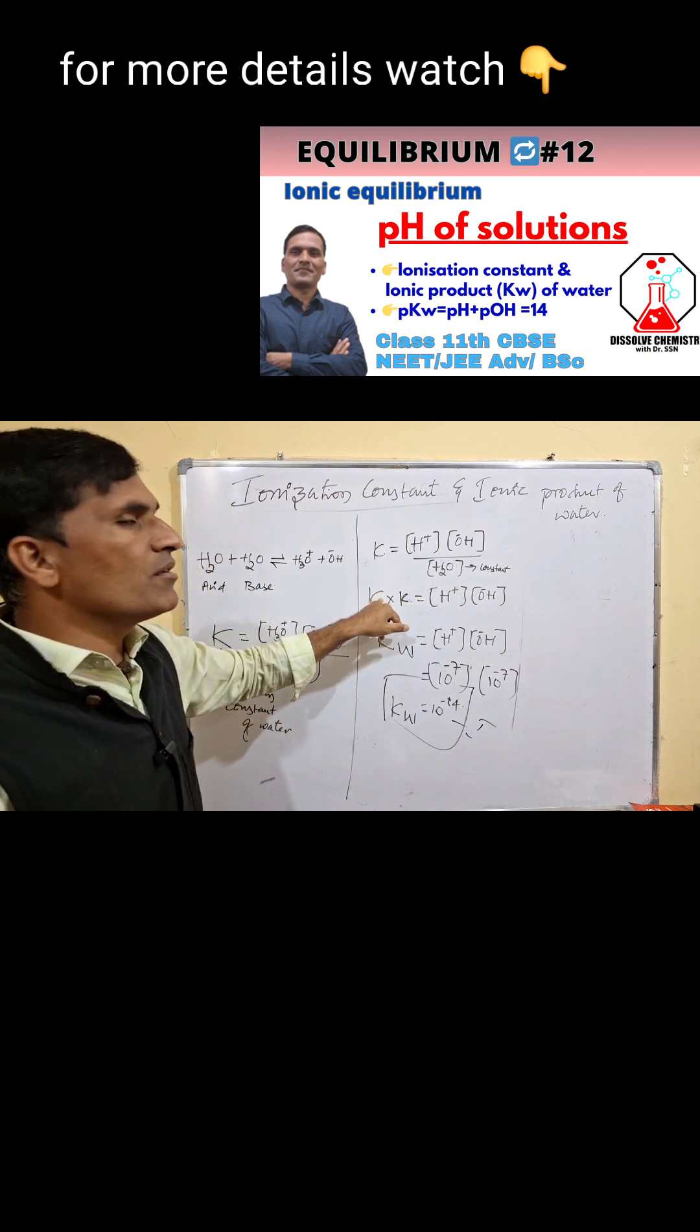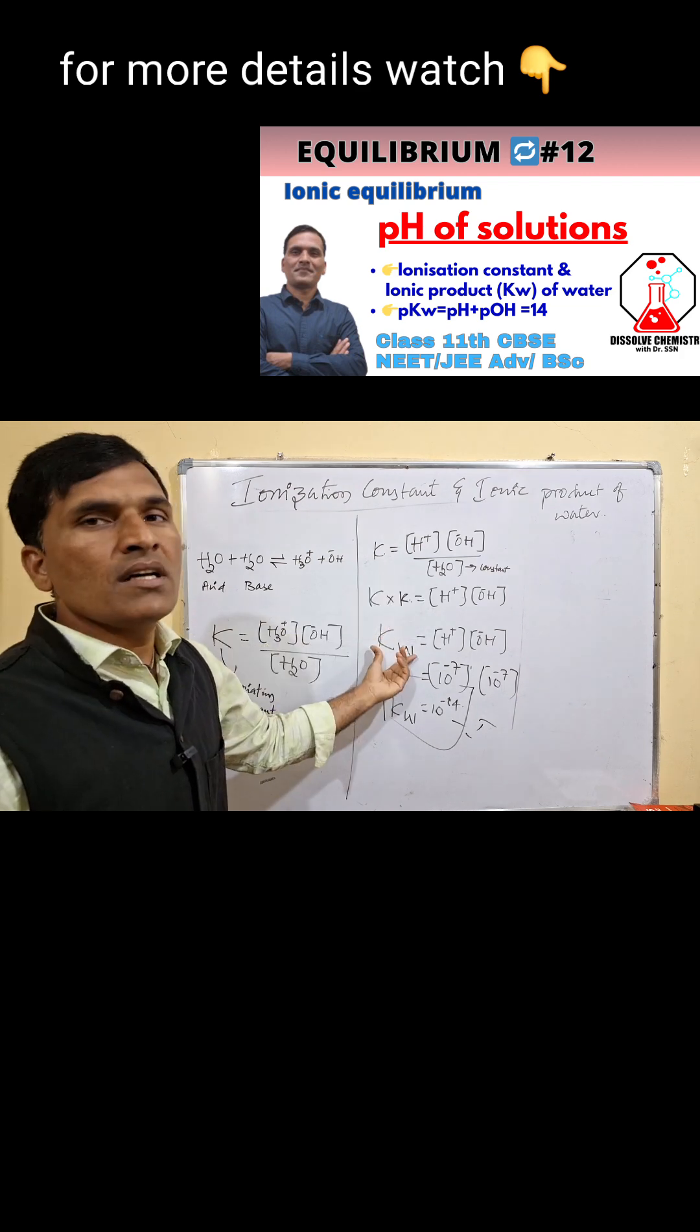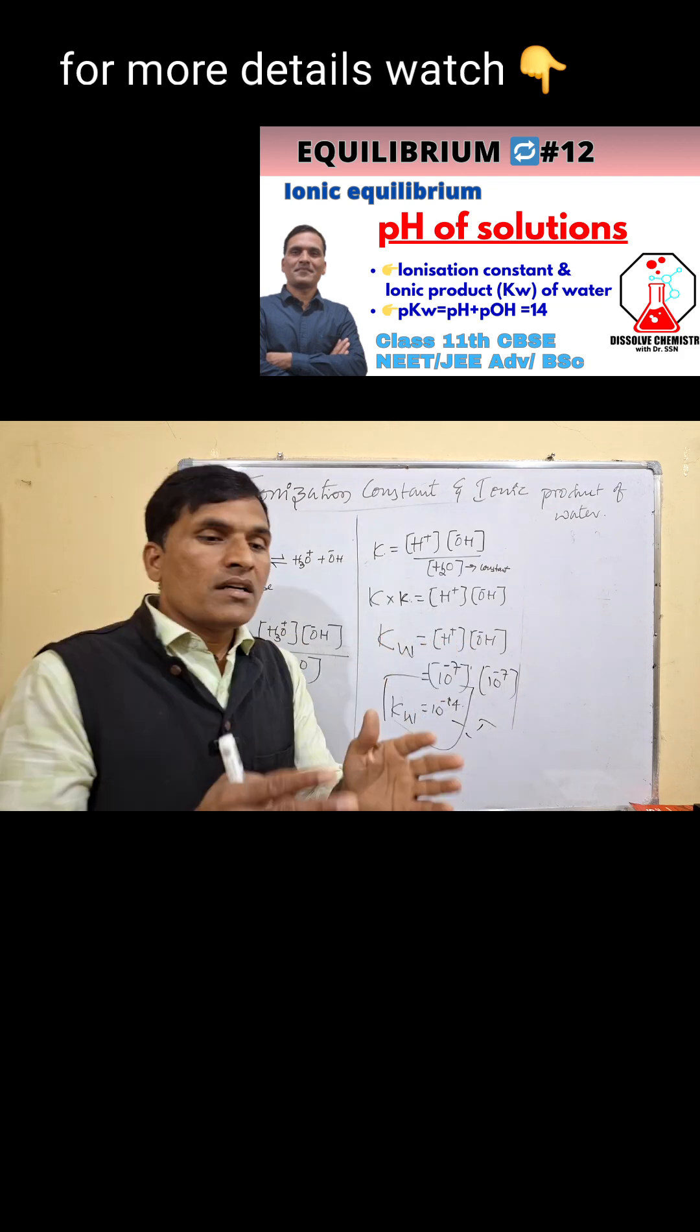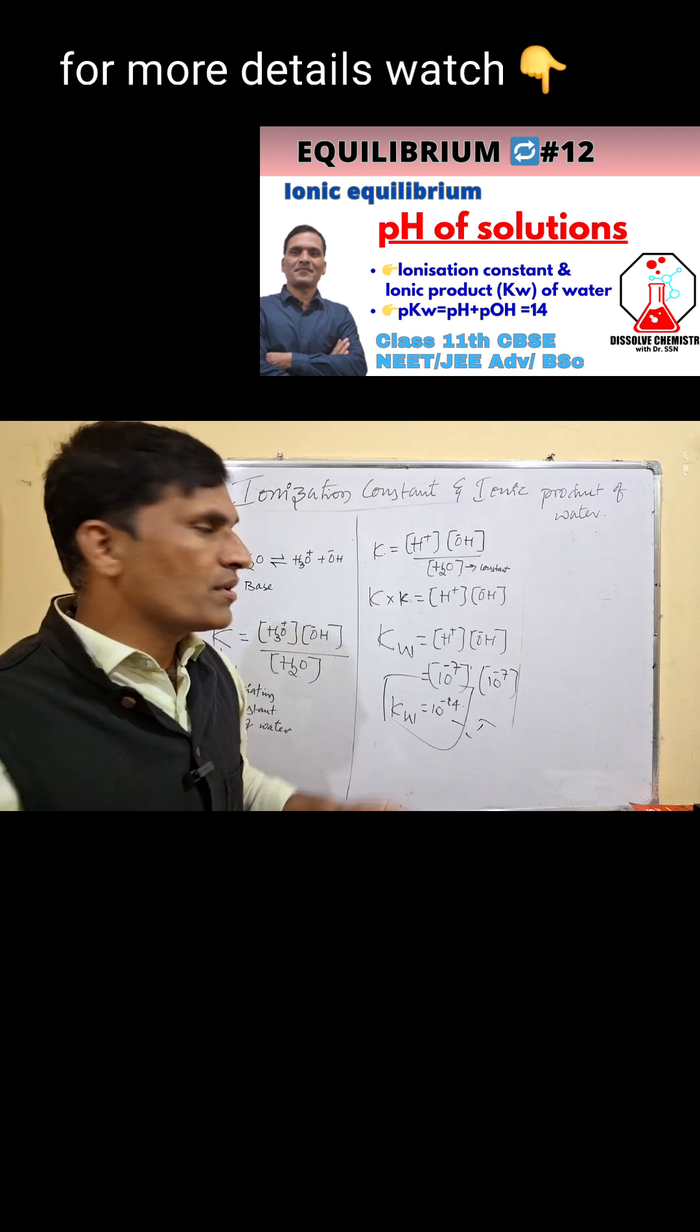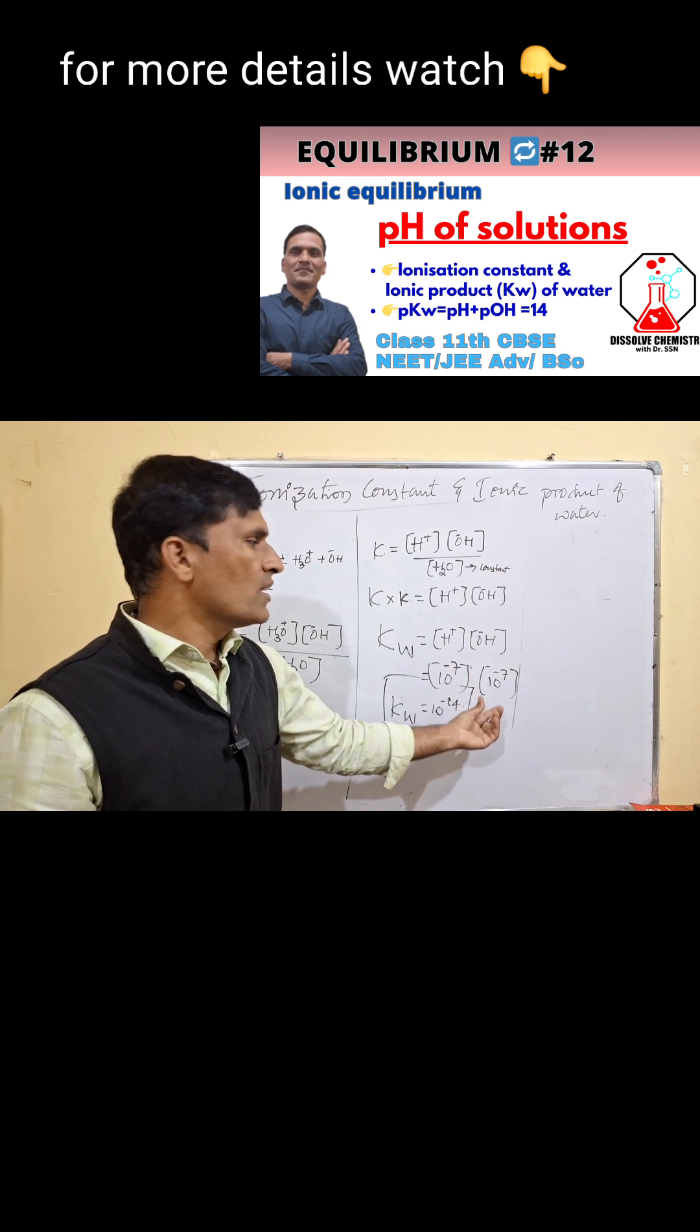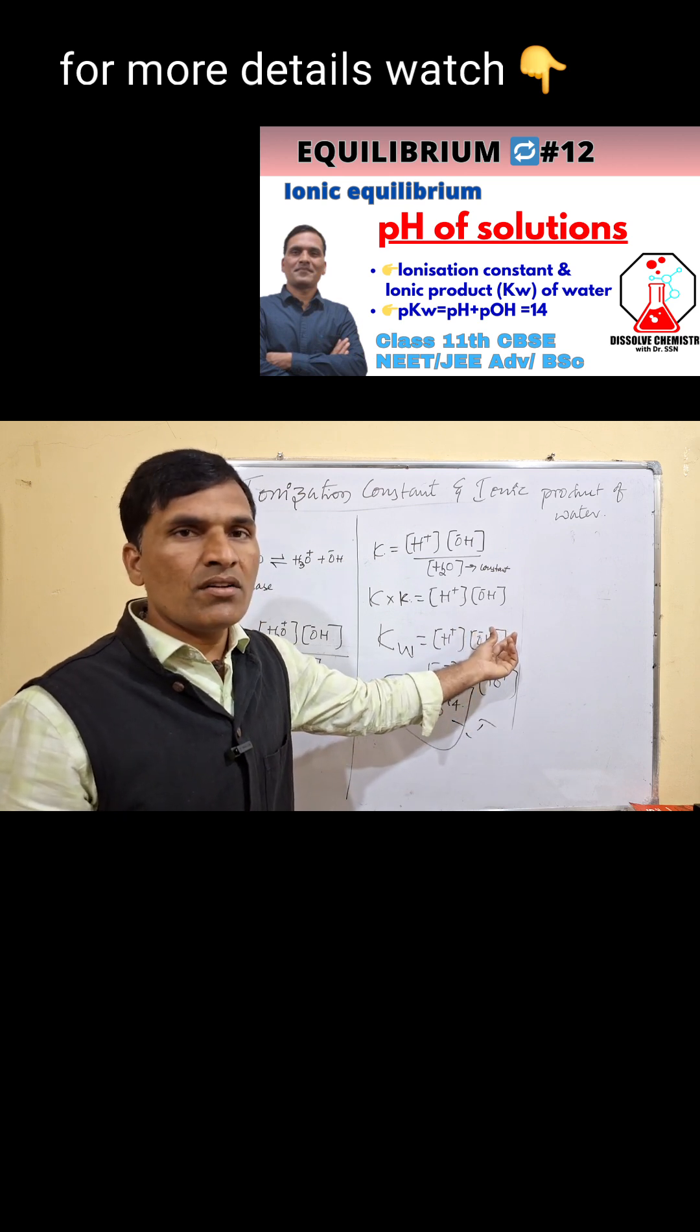That constant times the equilibrium constant is called the ionic product of water. In one liter of pure water, 10 to the power minus 7 moles of water undergo dissociation to give 10 to the power minus 7 H+ ions and 10 to the power minus 7 OH- ions.